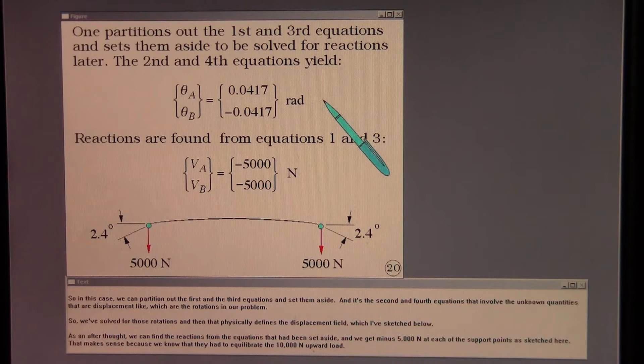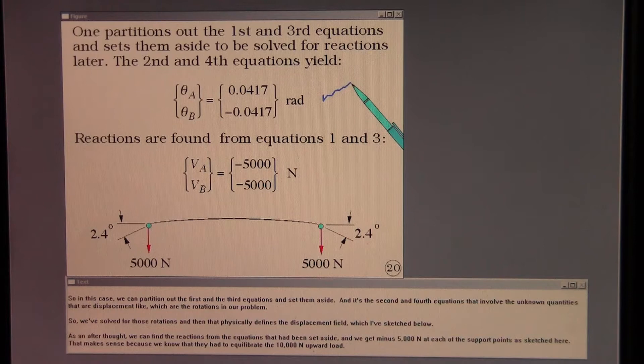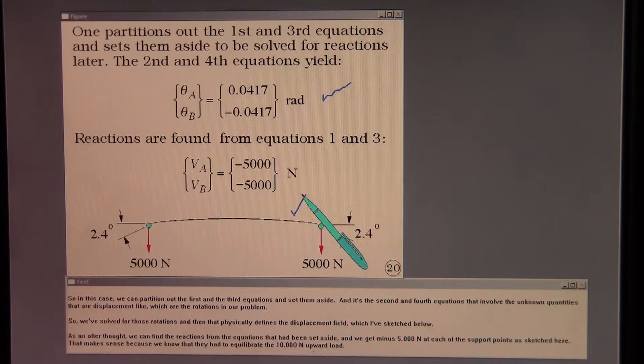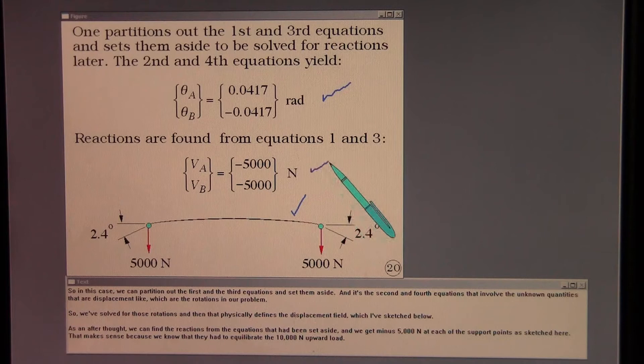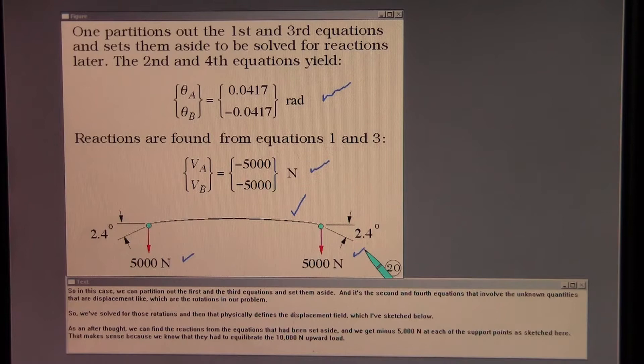It's the second and fourth equations that involve the unknown quantities that are displacement-like, which are the rotations in our problem. So we've solved for those rotations, and that physically defines the displacement field, which I've sketched below. As an afterthought, we can find the reactions from the equations that had been set aside, and we get minus 5,000 Newtons at each of the support points. That makes sense, because they had to equilibrate the 10,000 Newton upward load.